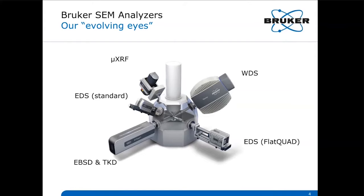We have the EBSD and TKD for crystallographic information from your sample, the micro XRF with the external x-ray source which has a detection limit down to 10 ppm for heavier elements, the wave disperser spectrometer WDS specially suited for light element quantification, and the standard EDS detector — the all-rounder for precise quantification, mappings, particle analysis, and so on.